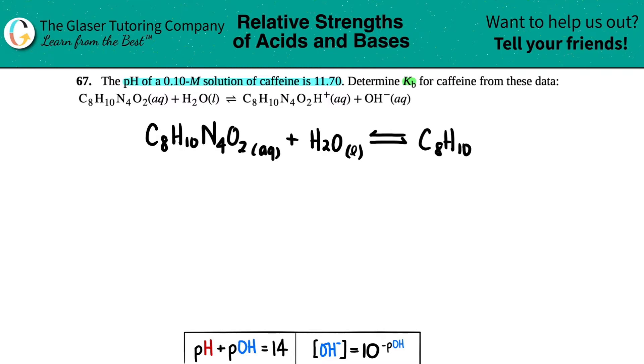And this is at equilibrium, which means that the acid or base here is not a strong acid or base, and we'll figure out which one it is in a little bit. So C8H10N4O2H plus, and that's aqueous. And then finally, we produce OH minus, and that's also aqueous.